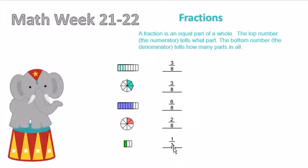Because the bottom number is the number that we have in all, and the top number is the amount that we have shaded in. Do you see that? I hope you guys enjoyed that video. I hope you subscribe and I hope you have a very great week.